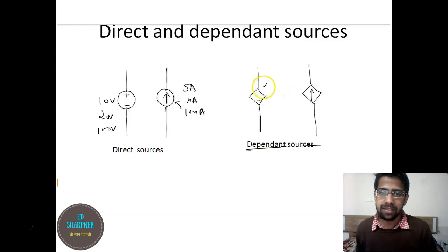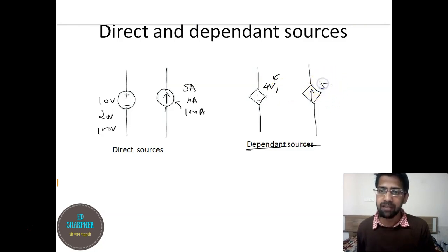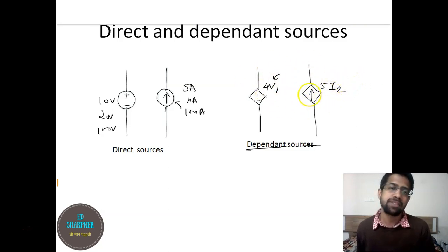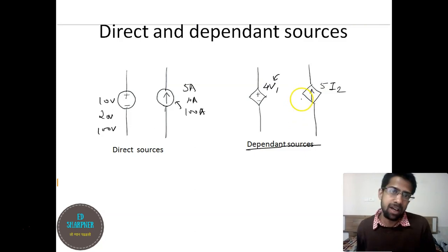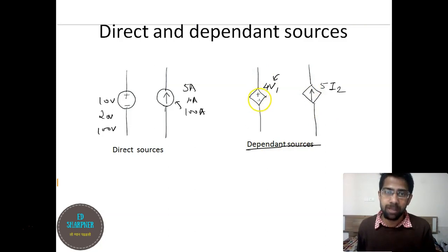Dependent sources can be modeled as, say, 4·v1 where v1 is some voltage value — an inner variable in the circuit — and this is a current source shown in a diamond. You can have values like 5·i2, where i2 might be some current in the circuit. We have such dependent sources because our objective is to find unknown values, and we must form simultaneous equations. The dependent sources help us form equations to find the unknown values.